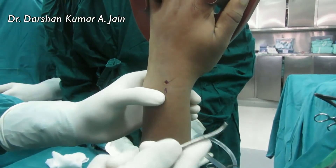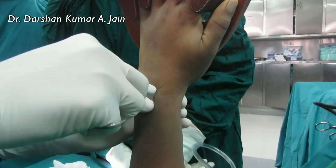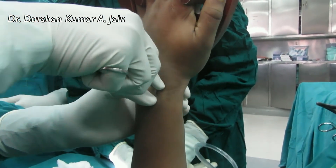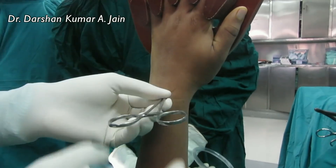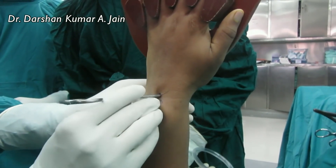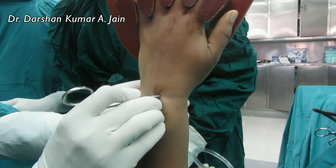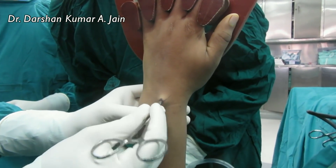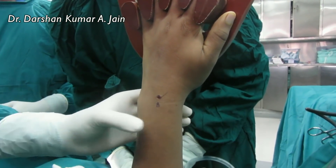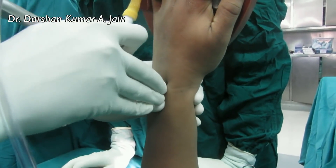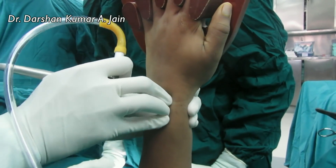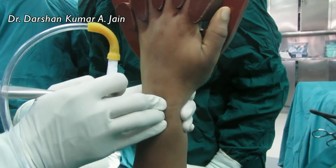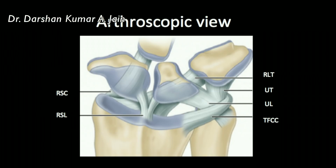A blunt hemostat is used and entered into the radiocarpal joint just distal to the Lister's tubercle. A 2.4 scope is commonly used for wrist arthroscopy. Access is gained into the radiocarpal joint and this is the view inside the joint.